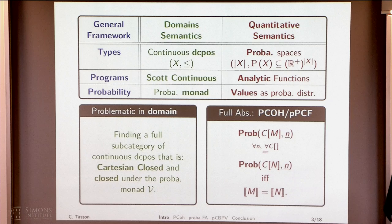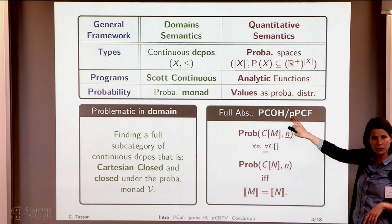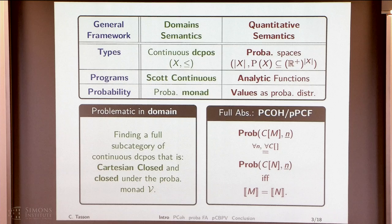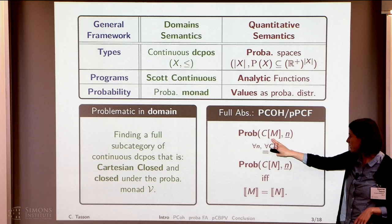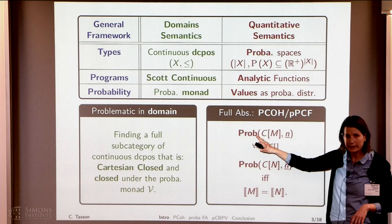In this setting, probabilistic full abstraction means that two programs have the same semantics if and only if, in any context, they will converge to the same value with exactly the same probability.